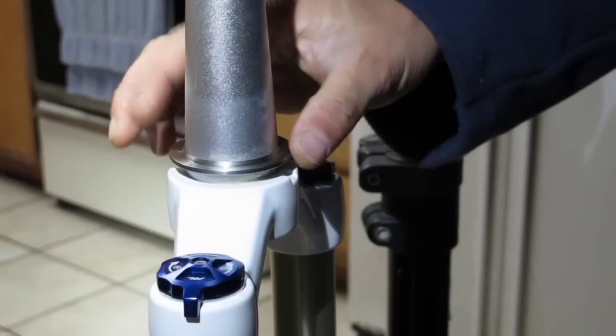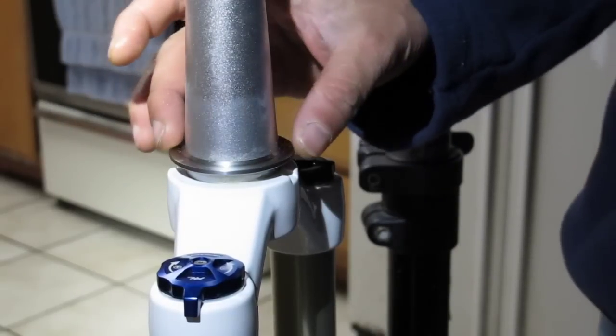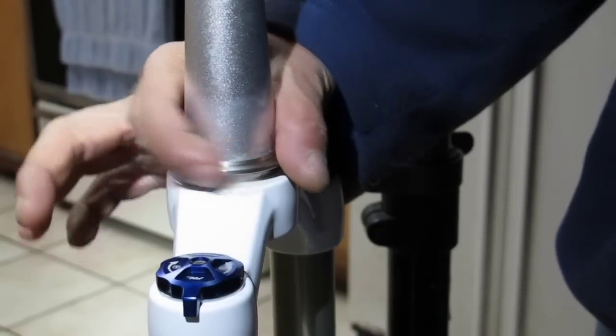Now I slid the crown race on. I need to put it down. Unfortunately, I don't have the proper tools to seat it against the fork.